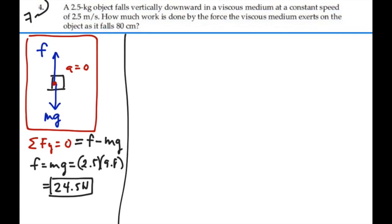We know it's going to go a distance of 80 centimeters, so that's going to be 0.8 meters. And in terms of vectors, we've got this frictional force going up like this. So as a vector, the frictional force is equal to 24.5j newtons.